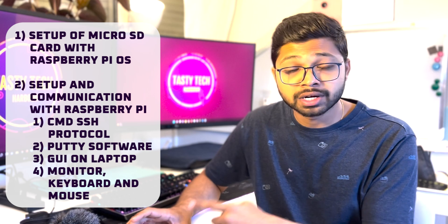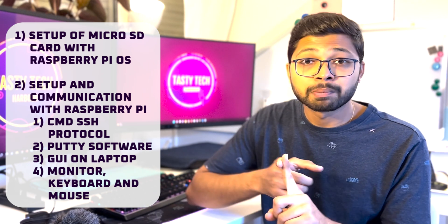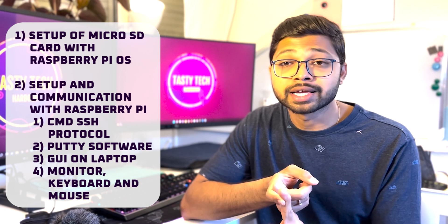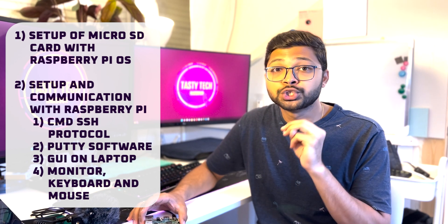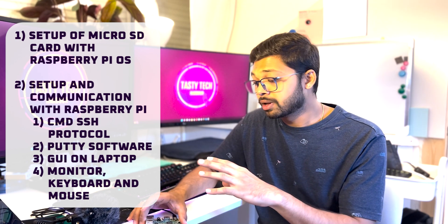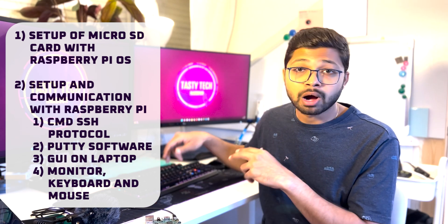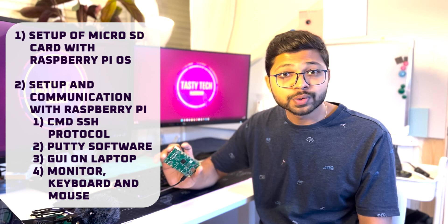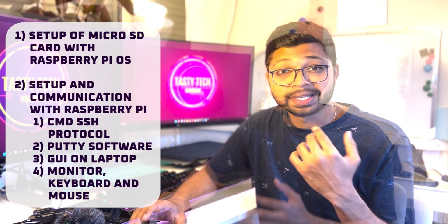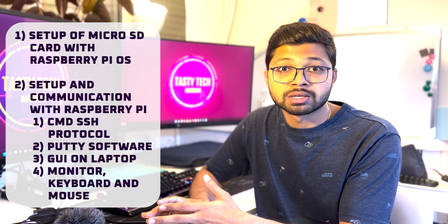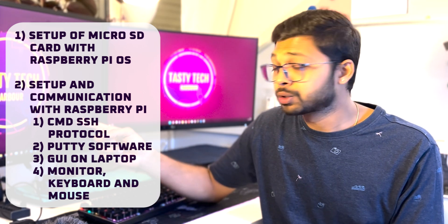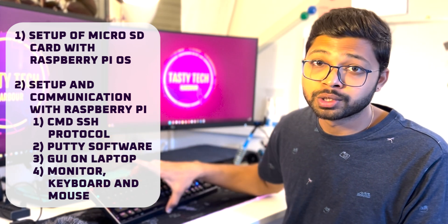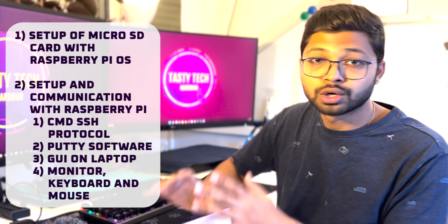The first method is through the command prompt using SSH. The second method is also using SSH but using a terminal emulator. The third method is using a GUI application on your laptop, so in case you don't have a separate keyboard, mouse, and monitor, you can use your own laptop to see the GUI of the OS running inside the Raspberry Pi. The fourth method is using HDMI to connect to a monitor, along with a keyboard and mouse.